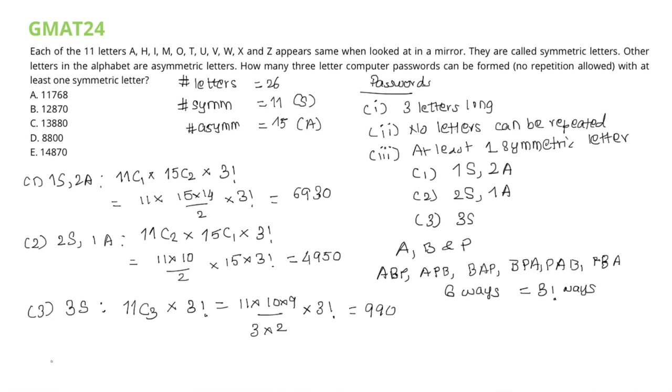So the total number of passwords that could be generated using the conditions above is nothing more than the addition of the values we calculated for case 1, 2, and 3. Which gives us a grand total of 12,870 possible passwords.